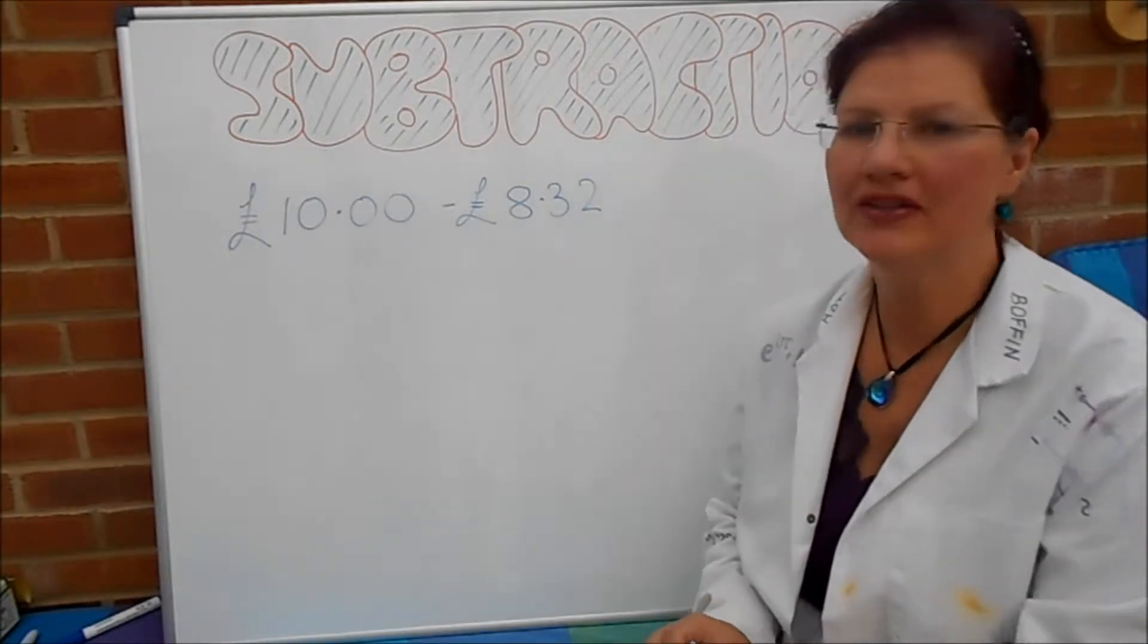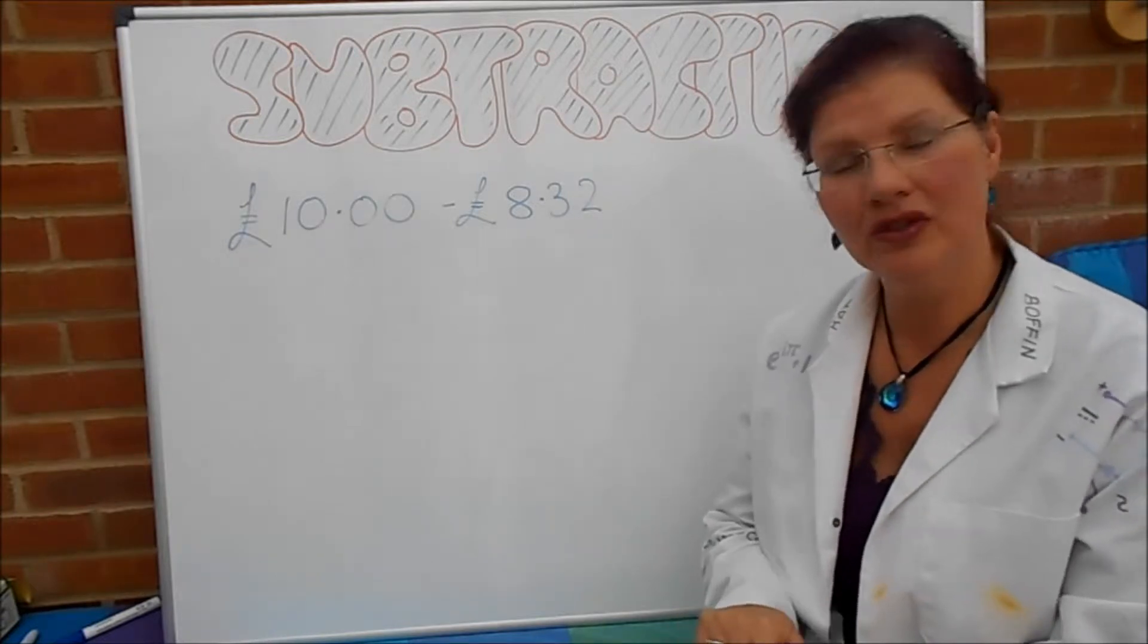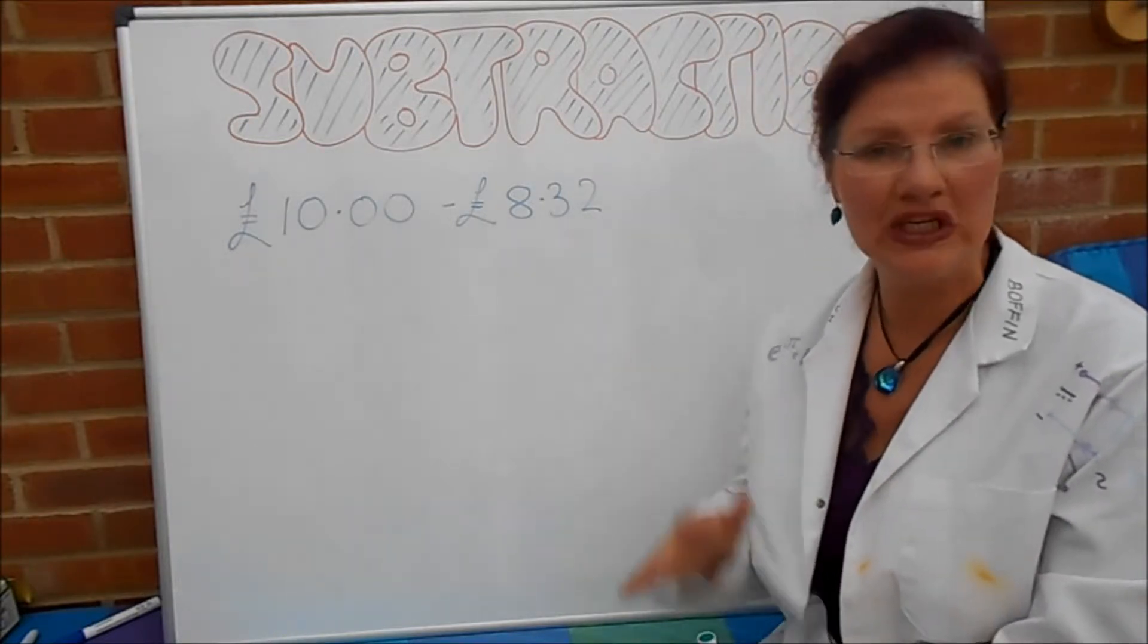This time we're not going to be using our place value pizzas or the column subtraction that we've done in other videos. We're going to look at a method called the shopkeeper method, which is very handy for doing in your head.